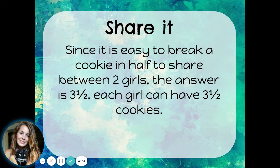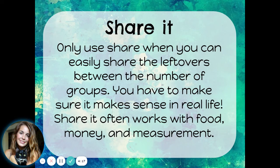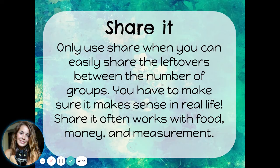Since it's easy to break or cut a cookie in half to share between the two girls, the answer here is three and a half. Each girl can have three and a half cookies. Only use Share It when you can easily share the leftovers between the number of groups — you have to make sure it makes sense in real life. Share It often works with food, money, and measurement. In this problem, we were talking about cookies, and it is easy for two girls to share one cookie. But if we had been talking about marbles or balloons, that wouldn't make sense — you can't cut a marble or a balloon in half to share.